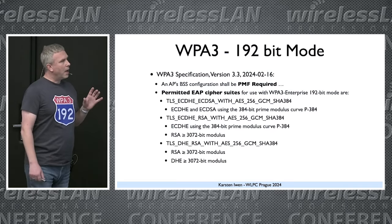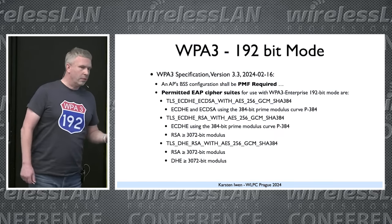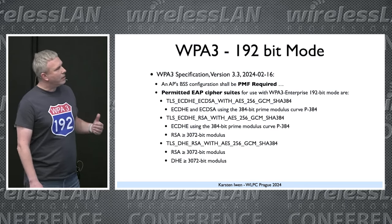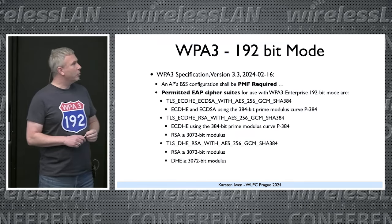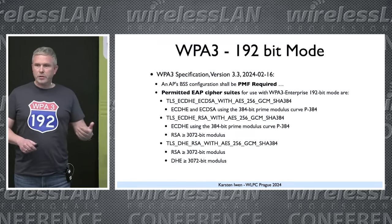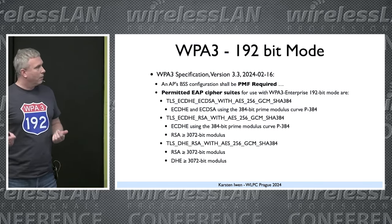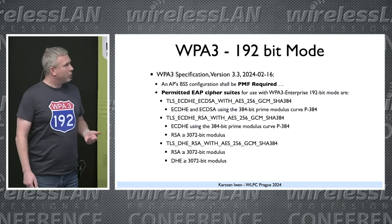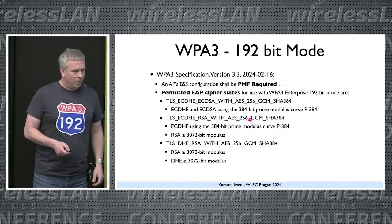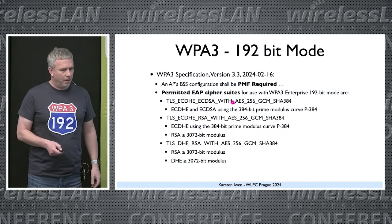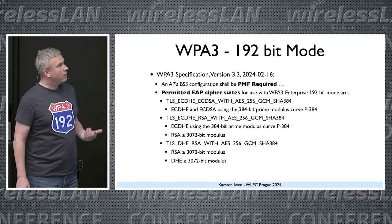We have a couple of EAP ciphers that are allowed — these three ciphers are based on TLS version 1.2. The initial specification of WPA3 is from 2018, but the RFC for EAP-TLS based on TLS 1.3 was only published in 2022, four years later. The top cipher in this list is the one I see most often in 802.1X networks, so it's already quite common.